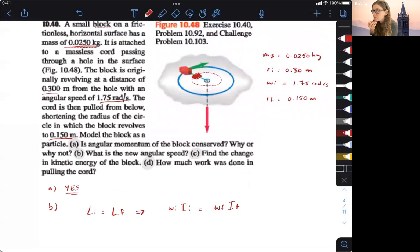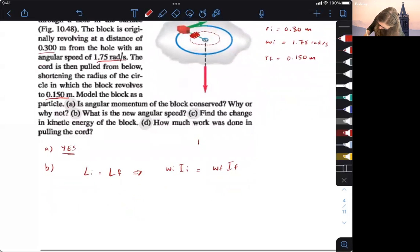So the block can be treated as a point mass. So we can say I is equal to MR squared, where R is the distance of the block from the hole. So we're going to say that I is equal to MR squared. So this is just a point mass.